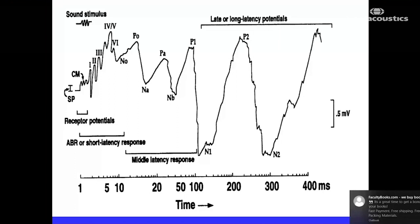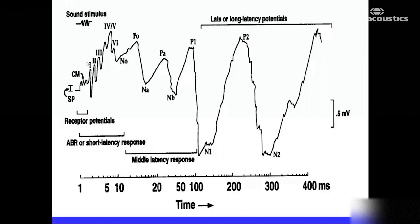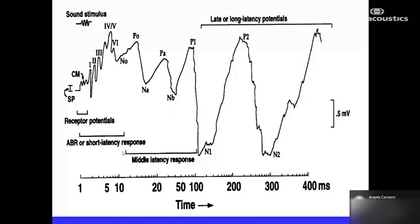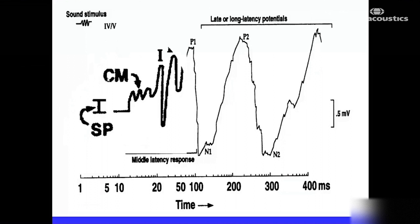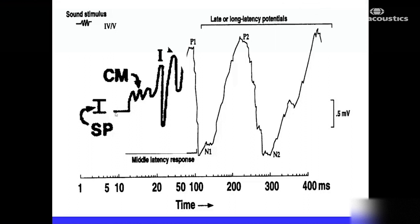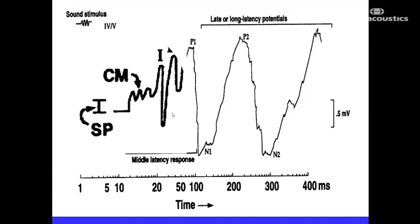This is a diagram of the clinically popular family of evoked potentials. If we classify them according to latency epoch — the short or early latency responses, the middle latency responses, and the long latency responses — ECOG involves recording the shortest members of the short latency evoked potential family. Those include the receptor potentials of the cochlea, in particular the cochlear microphonic (CM), the summating potential (SP), and the whole nerve or compound action potential of cranial nerve eight, which is virtually the same as wave one of the auditory brainstem response.